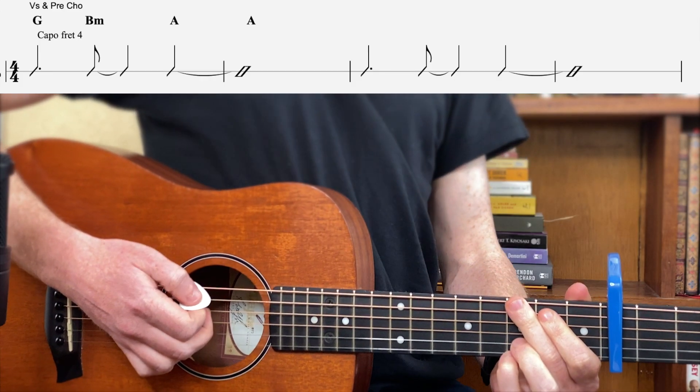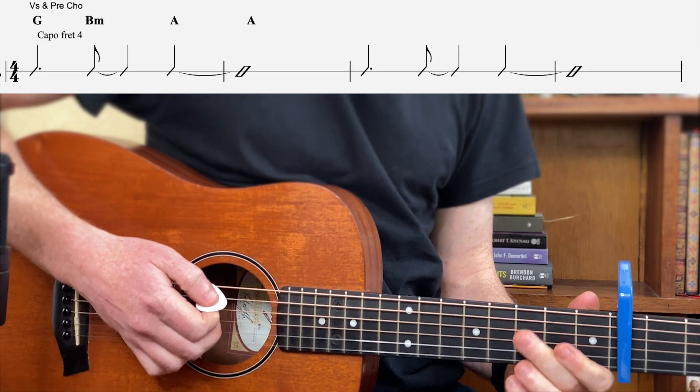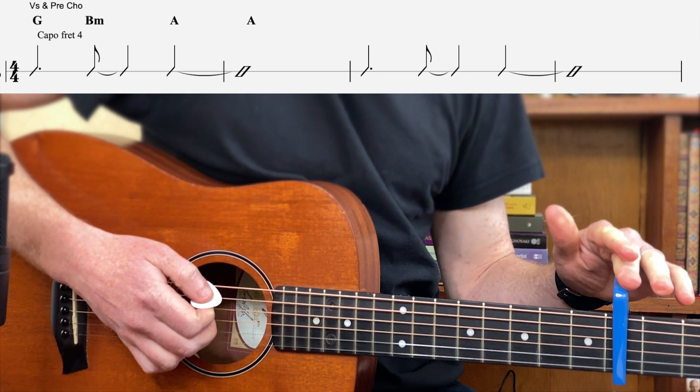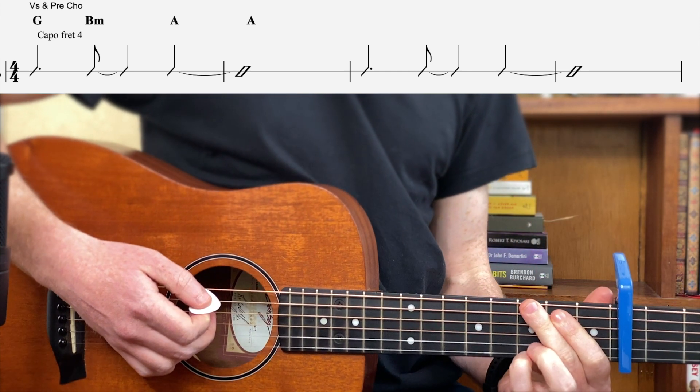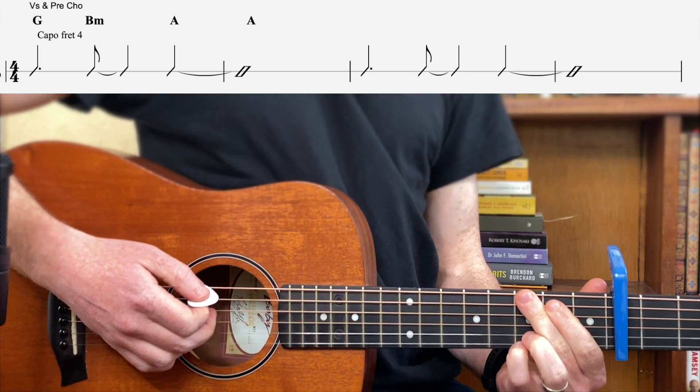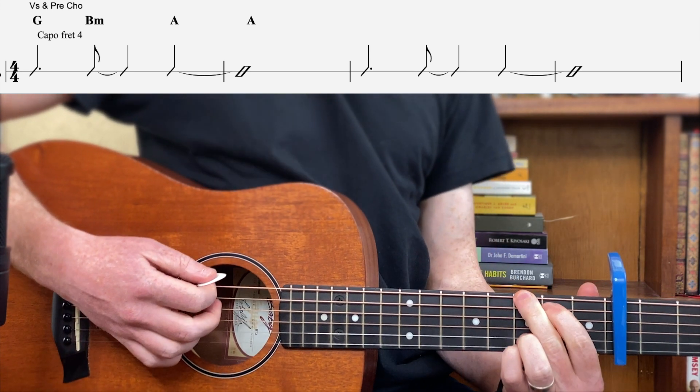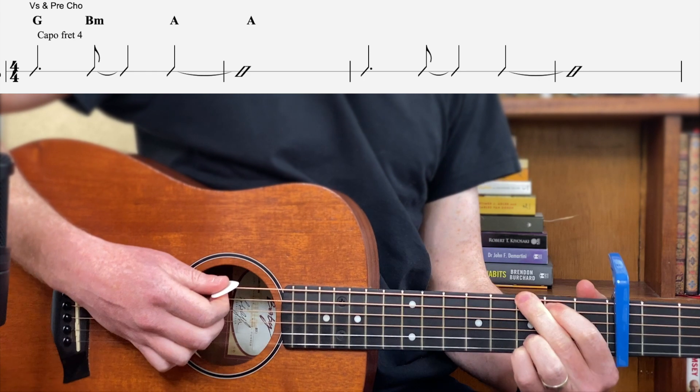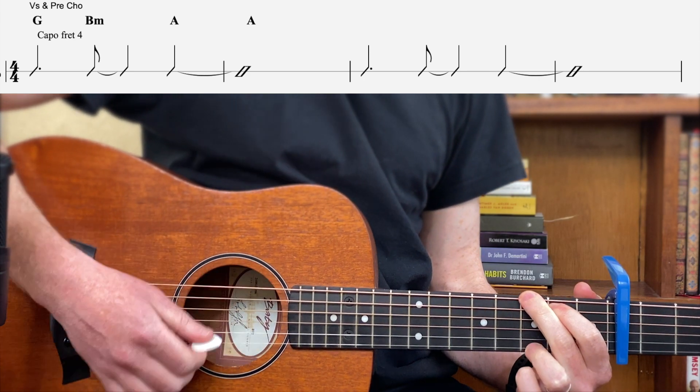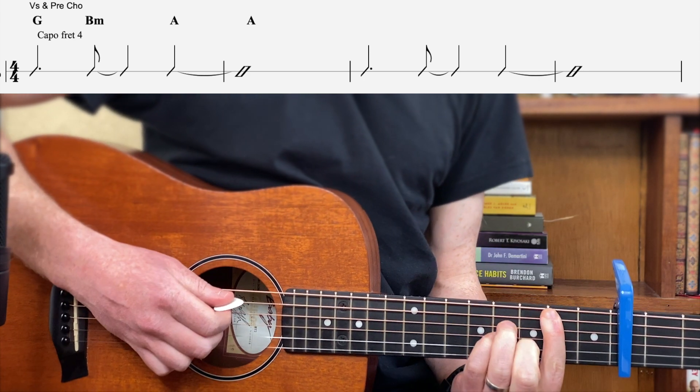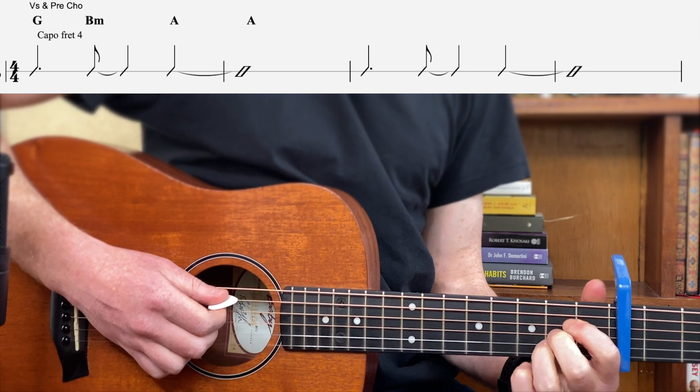Alright, so to play this Katy Perry song Daisies you will need a capo on the fourth fret. The chords, there are three chords for the whole song: we have a G, you can do four finger G or three finger G whichever you wish, B minor, and then A.